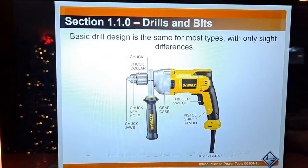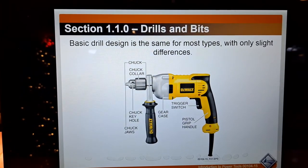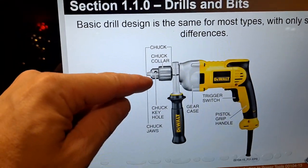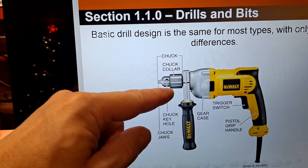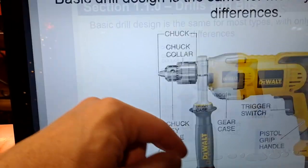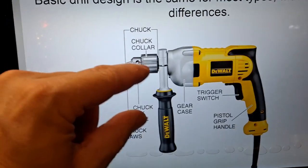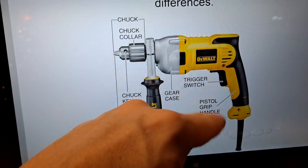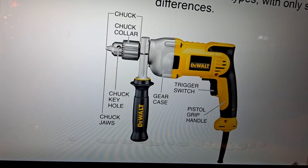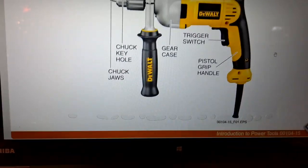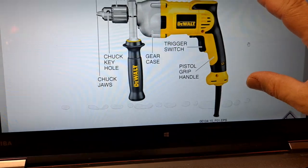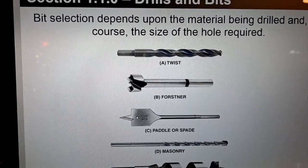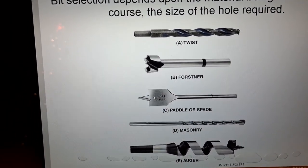The basic drill design is the same for most types with only slight differences. The chuck and collar will sometimes differ — sometimes it's a keyless chuck. The chuck jaws hold the bit. The main components include the handle, gear case with motor, trigger switch, and pistol grip.